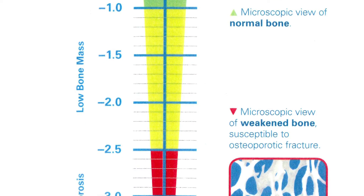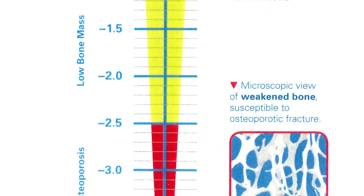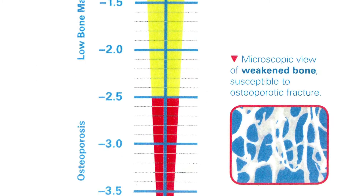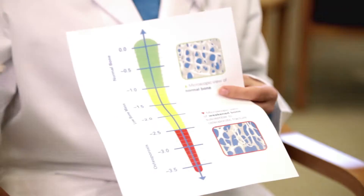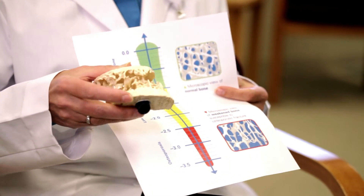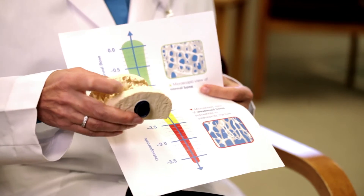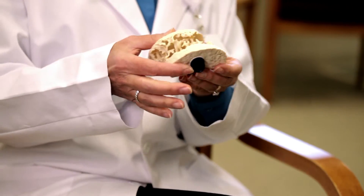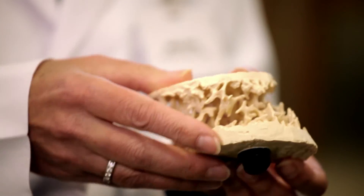The red zone is osteoporosis — any T-score measured at minus 2.5 or below. As you can see by the bone model, osteoporotic bone looks much different than healthy bone. You can see the lack of bone density, the holes are greater, and there is more compression of the bone.